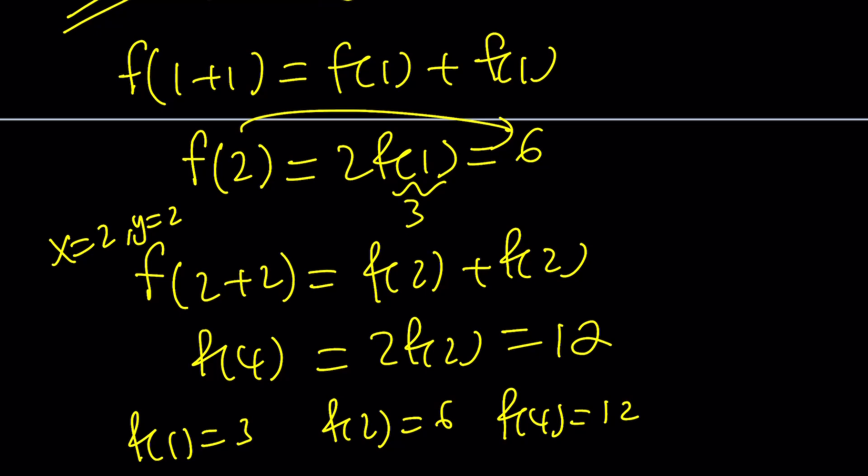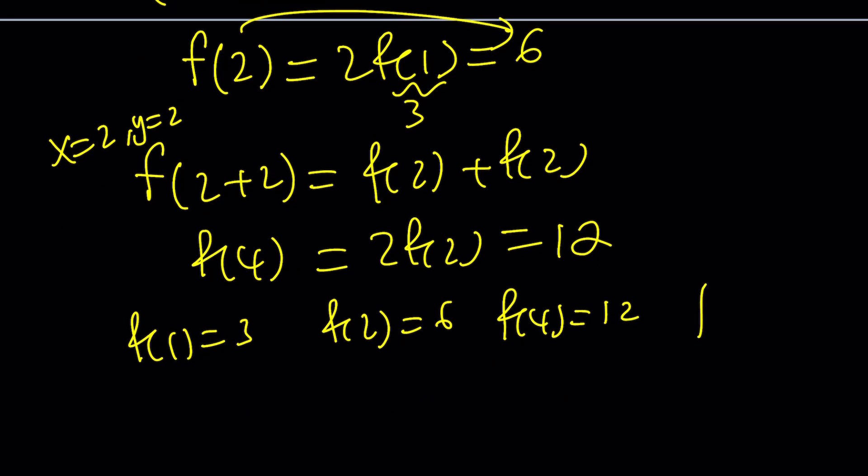f of 1 is equal to 3, then f of 2 is equal to 6, then f of 4 is equal to 12, f of 8. Think about the inputs. The inputs are powers of 2 because we double every time, and that also doubles the outputs. So that should help you find f of 8 next, because f of 8 is just going to be 24 by following the same pattern.